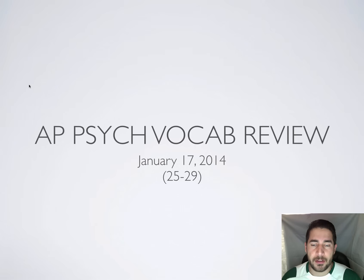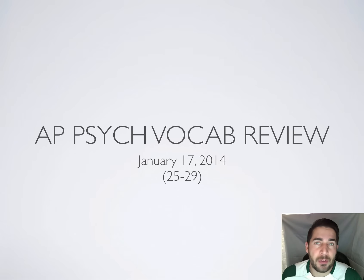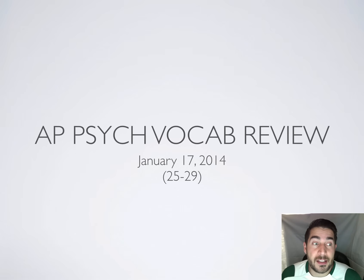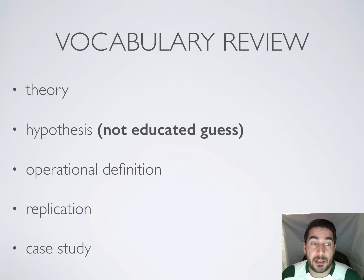Hey, January 17th, we got numbers 25 through 29. Vocab review — this is big stuff on research methods. We really need to go over these things. They are important and they will be used throughout the entire semester. So watch this video once or twice and buckle up. Here we go.